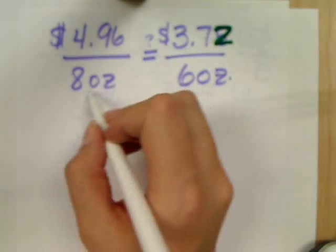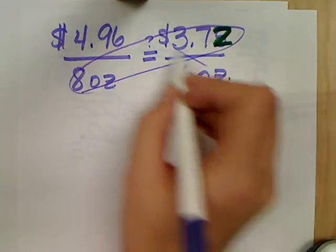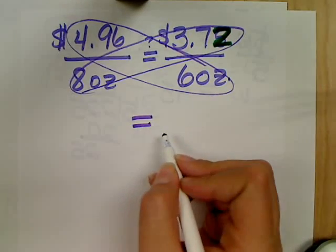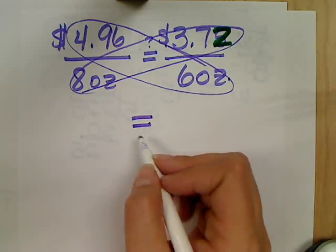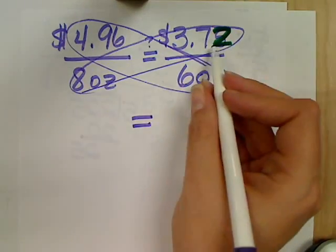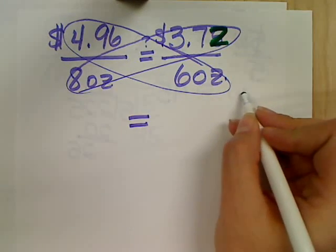So we're cross-multiplying. You bring down your equal sign, and let's go ahead and do 372 times 8. So we'll pull to the side.